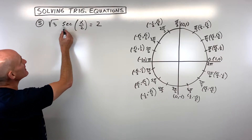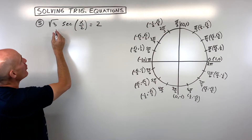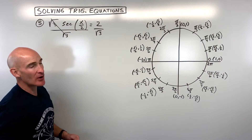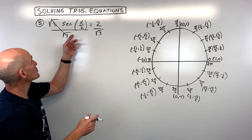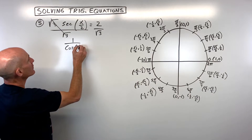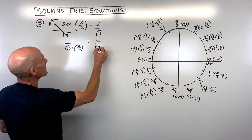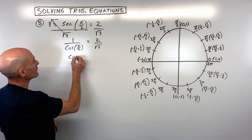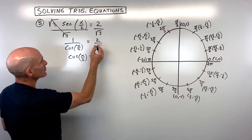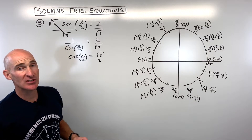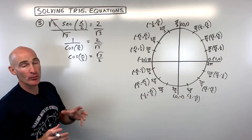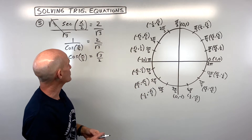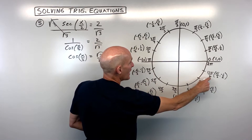For example number five, we want to isolate the secant function. Divide both sides by square root of three. Secant is the reciprocal of cosine, so we can write it as one over cosine of x divided by two equals two over root three. Taking the reciprocal of both sides gives cosine of x over two equals square root of three over two. On the unit circle, the x-coordinate equals root three over two at pi over six and eleven pi over six.